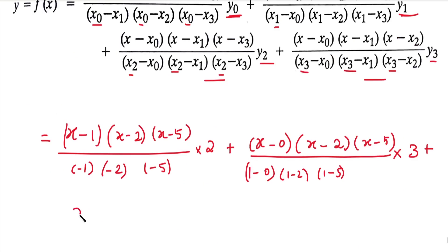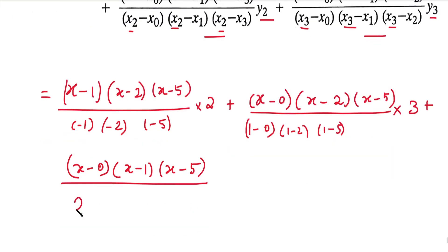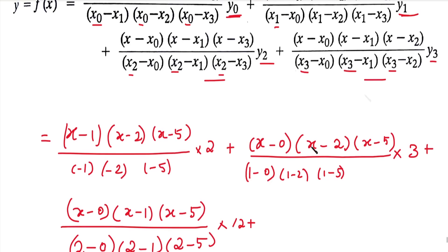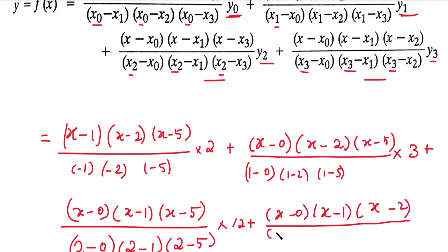The second term denominator uses x1 equal to 1: so 1 minus 0, into 1 minus 2, into 1 minus 5, multiplied by y1 equal to 3. Then the third term numerator is x minus 0, into x minus 1, into x minus 5, divided by 2 minus 0, into 2 minus 1, into 2 minus 5, multiplied by y2 equal to 12. The last term numerator is x minus 0, into x minus 1, into x minus 2, divided by 5 minus 0, into 5 minus 1, into 5 minus 2, multiplied by y3 equal to 147.